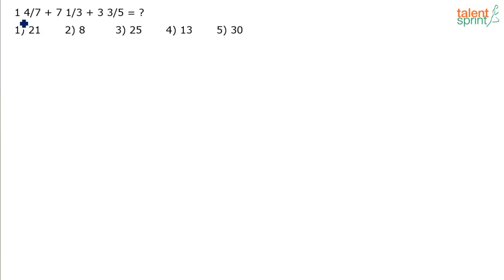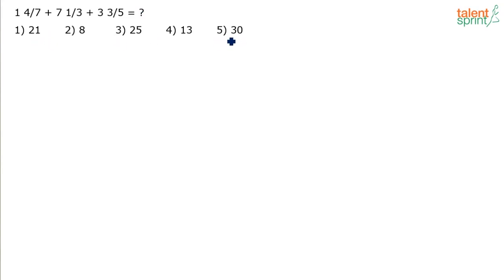The question is: 1 and 4/7 plus 7 and 1/3 plus 3 and 3/5 equals what? Options are 21, 8, 25, 13, and 30. Again, the options are not very close to each other, so we can do approximation to a great extent.